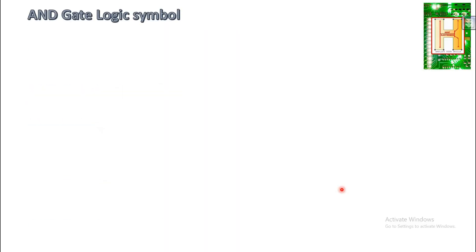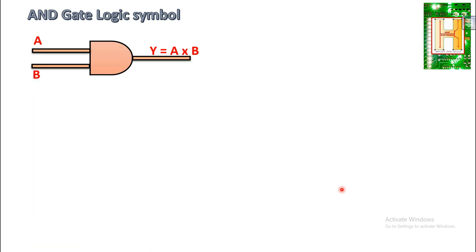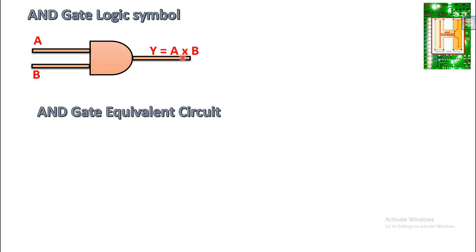First we are going to study about the AND gate. The logic symbol for the AND gate is as shown in the PPT, where A and B are the inputs and Y is equal to A into B, which is the output. We can say that the output is the product of the inputs.